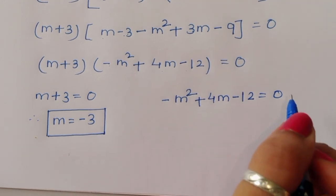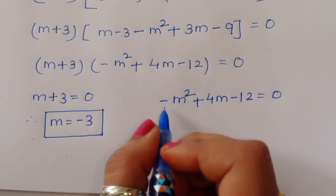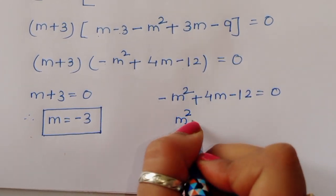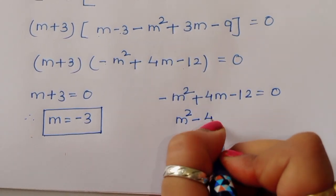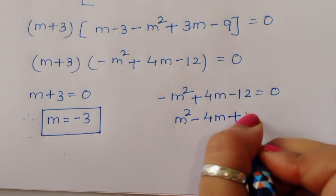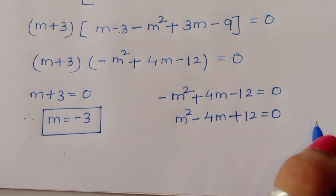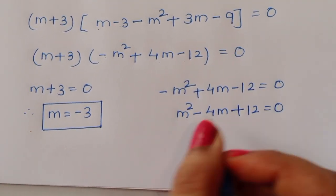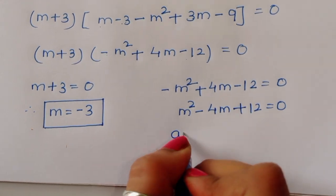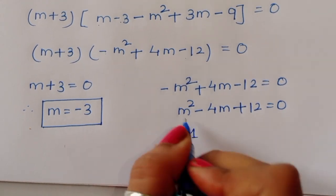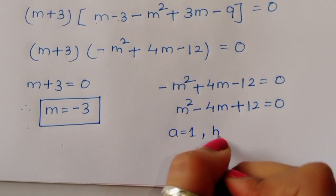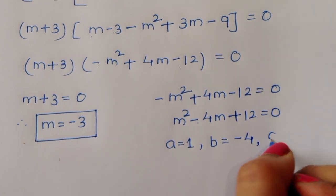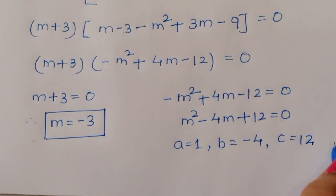For the second equation, minus m squared plus 4m minus 12 equals 0. Multiplying by minus 1 gives m squared minus 4m plus 12 equals 0. Here a equals 1 (coefficient of m squared), b equals minus 4, and c equals 12.